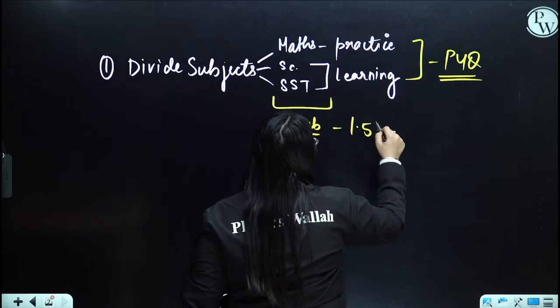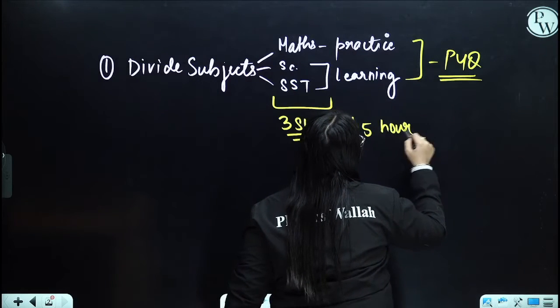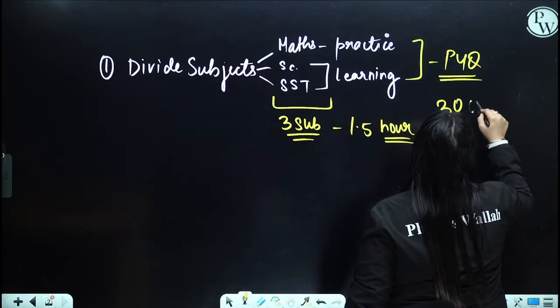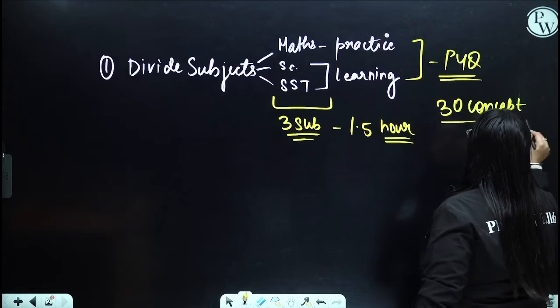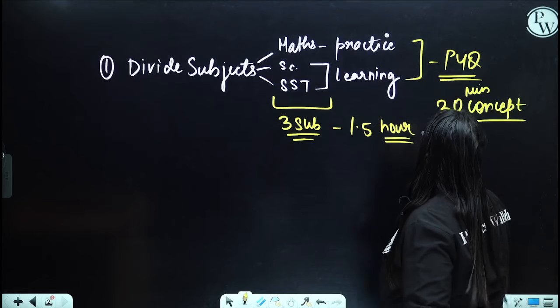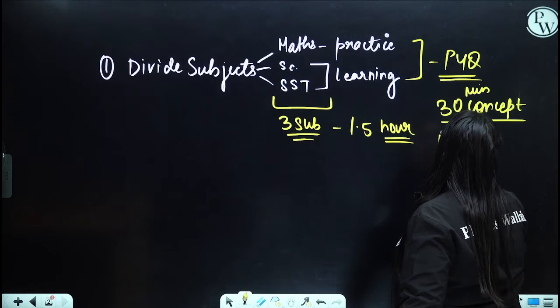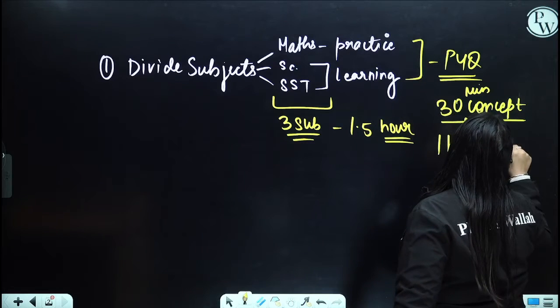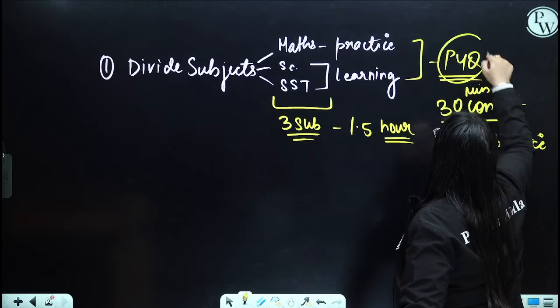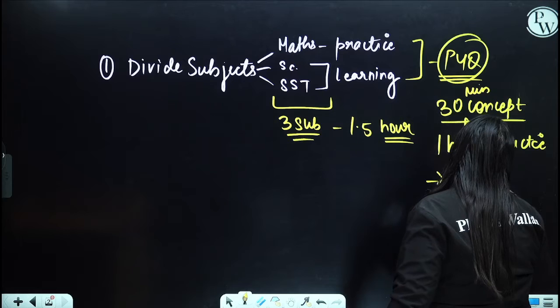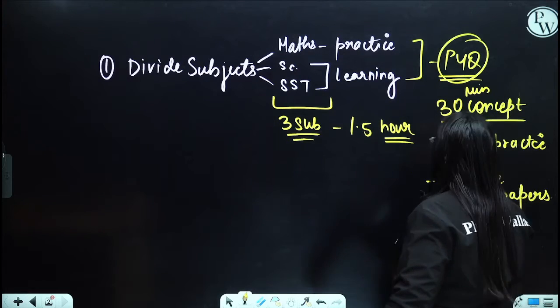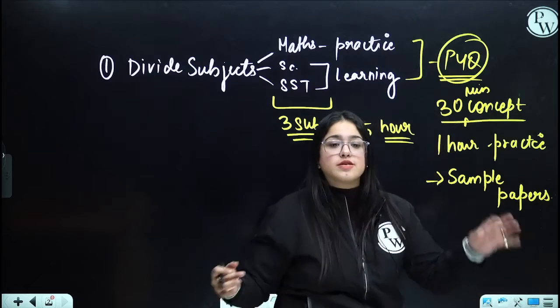At least give 1.5 hour to each subject a day. In which for 30 minutes, it is going to be the concept revision. Like you're going to revise the concept for 30 minutes. After you're done with 30 minutes of concept revision, you have to give at least 1 hour for practice. And as I told you, what are going to be the things that you practice? These are the previous year questions.